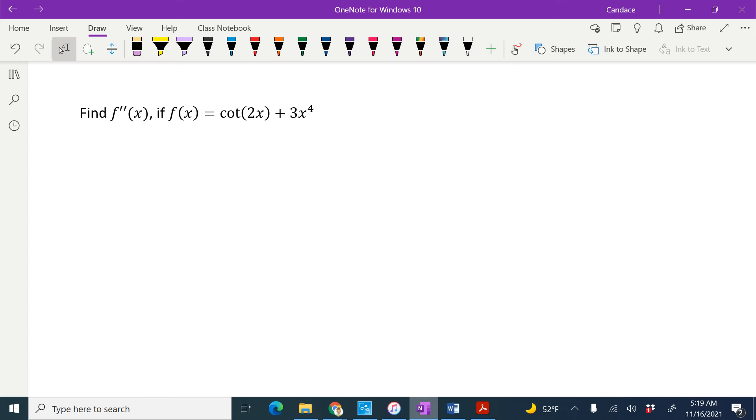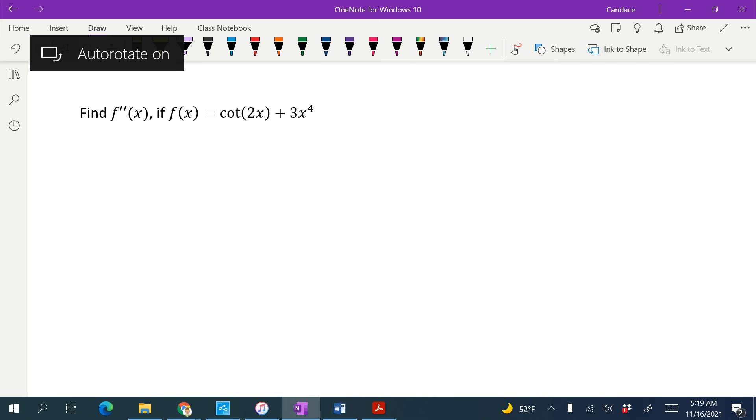In this video, we're going to find the second derivative of f of x. If our original equation is f of x equals cotangent 2x plus 3x to the 4th.